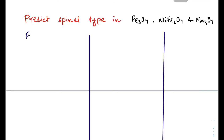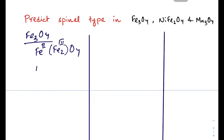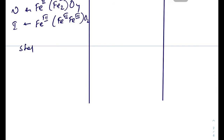Now let us solve the question step by step. For Fe₃O₄, we write this as Fe[Fe₂]O₄ as the general formula of spinels. There can be two possible structures: one where Fe²⁺ is in the tetrahedral hole and two Fe³⁺ in the octahedral hole (normal spinel), or Fe³⁺ in the tetrahedral and Fe²⁺ with Fe³⁺ in the octahedral (inverted spinel). We need to calculate the OSSE to determine which structure is correct. First, calculate the OSSE of Fe²⁺.